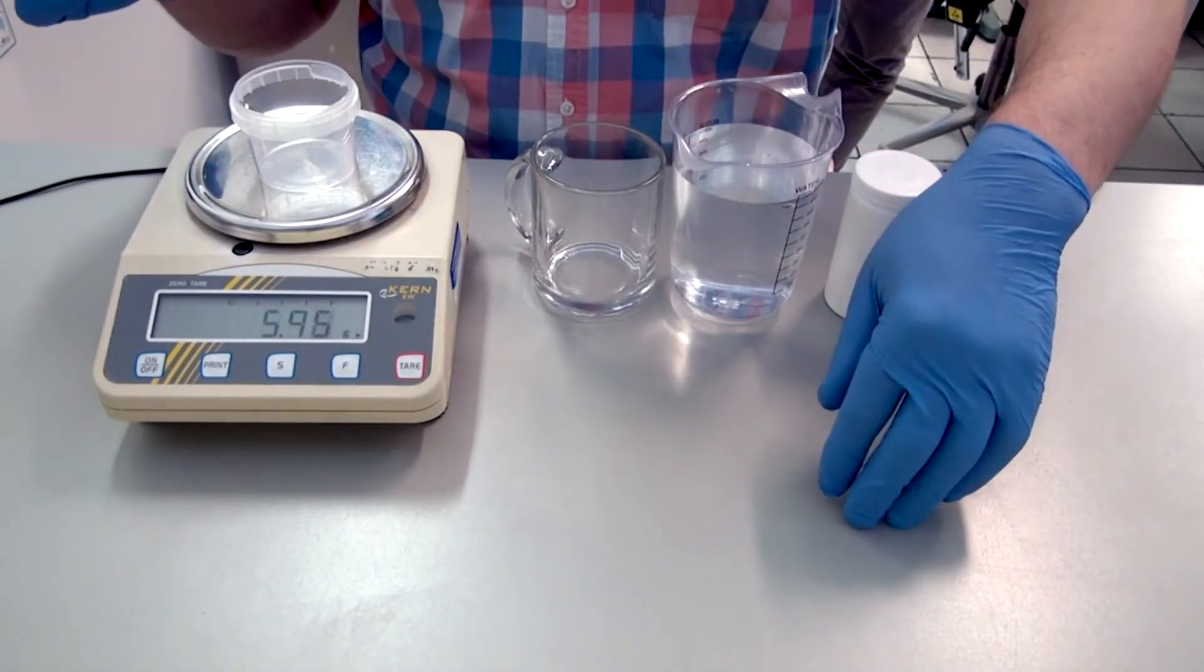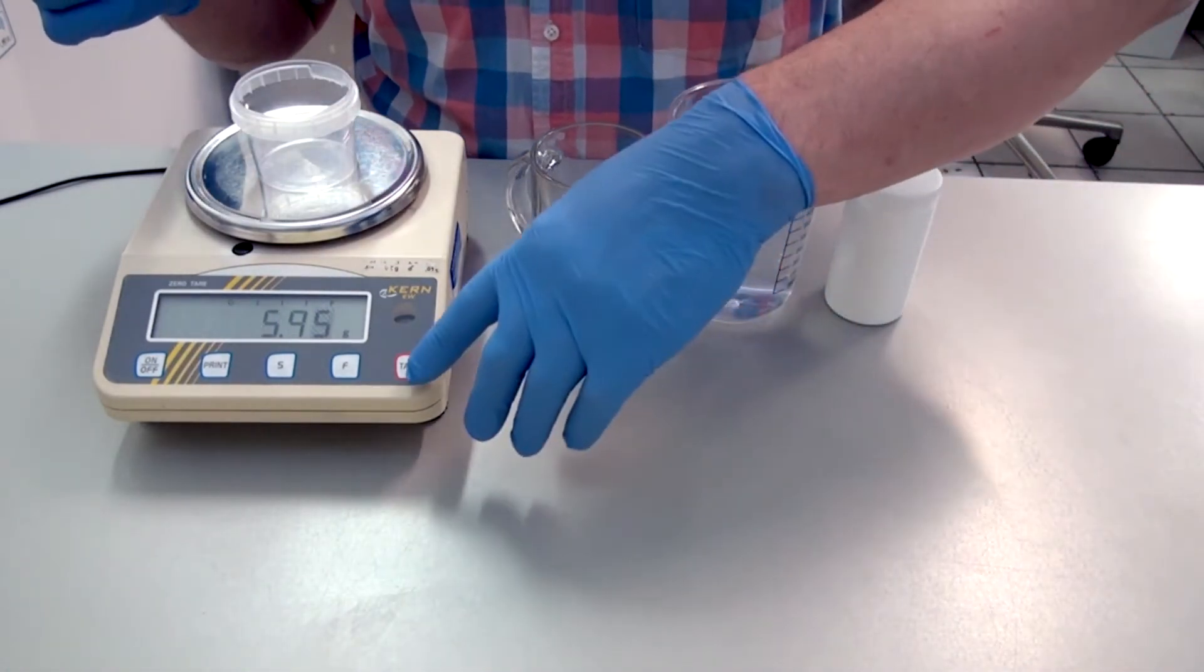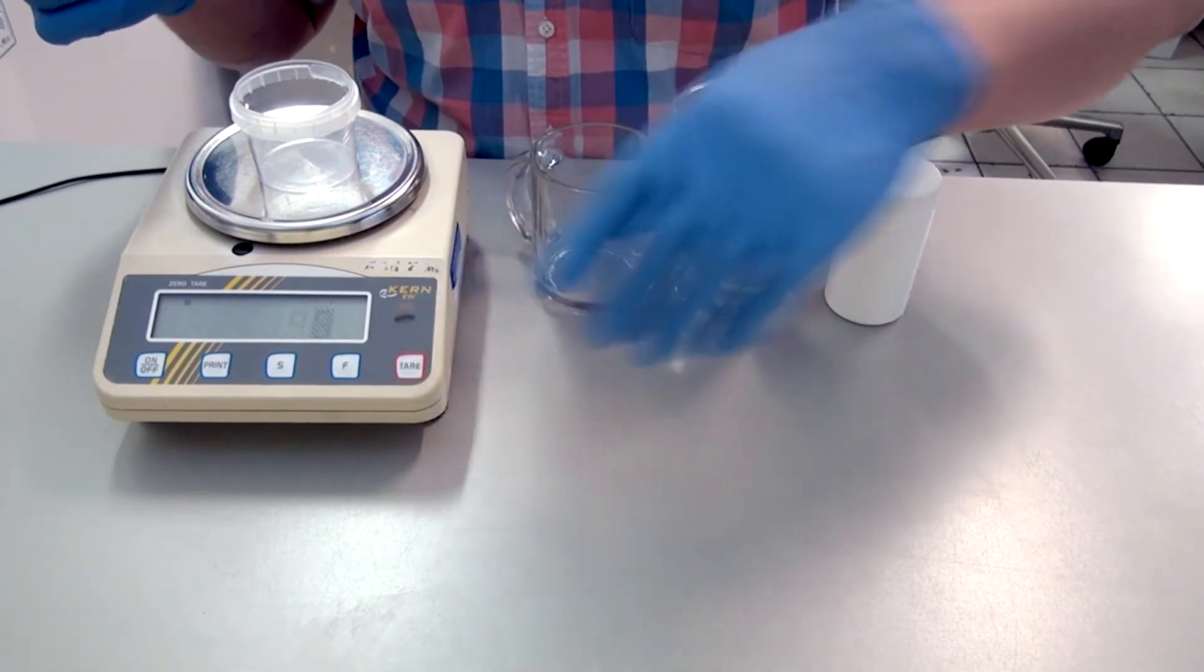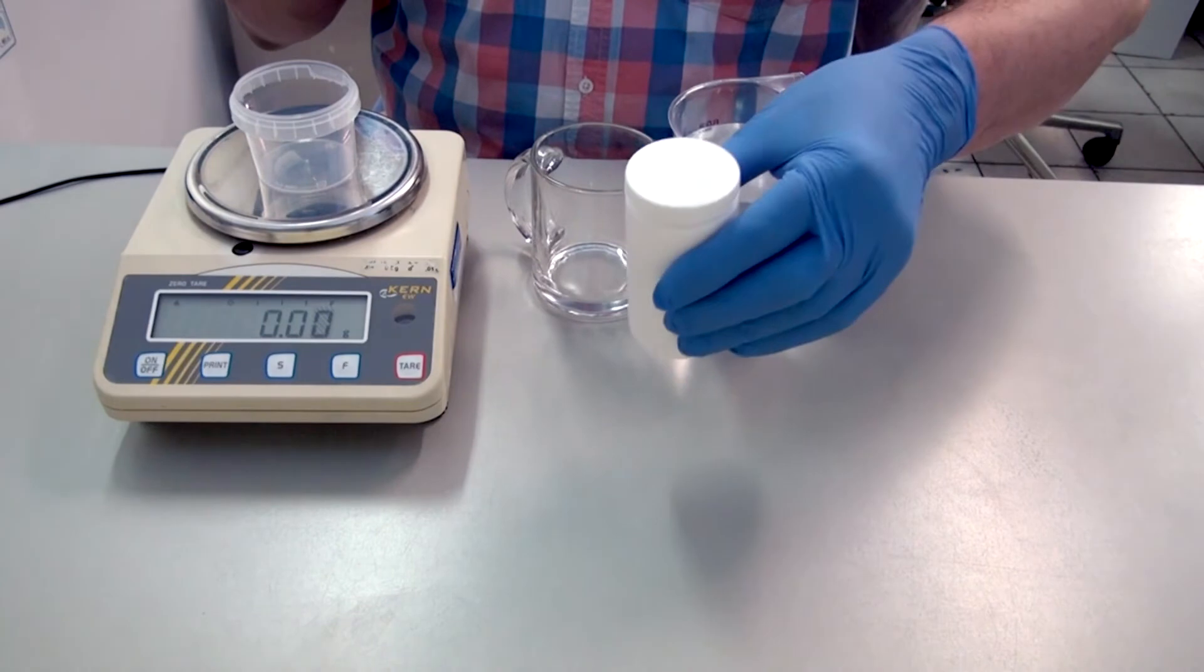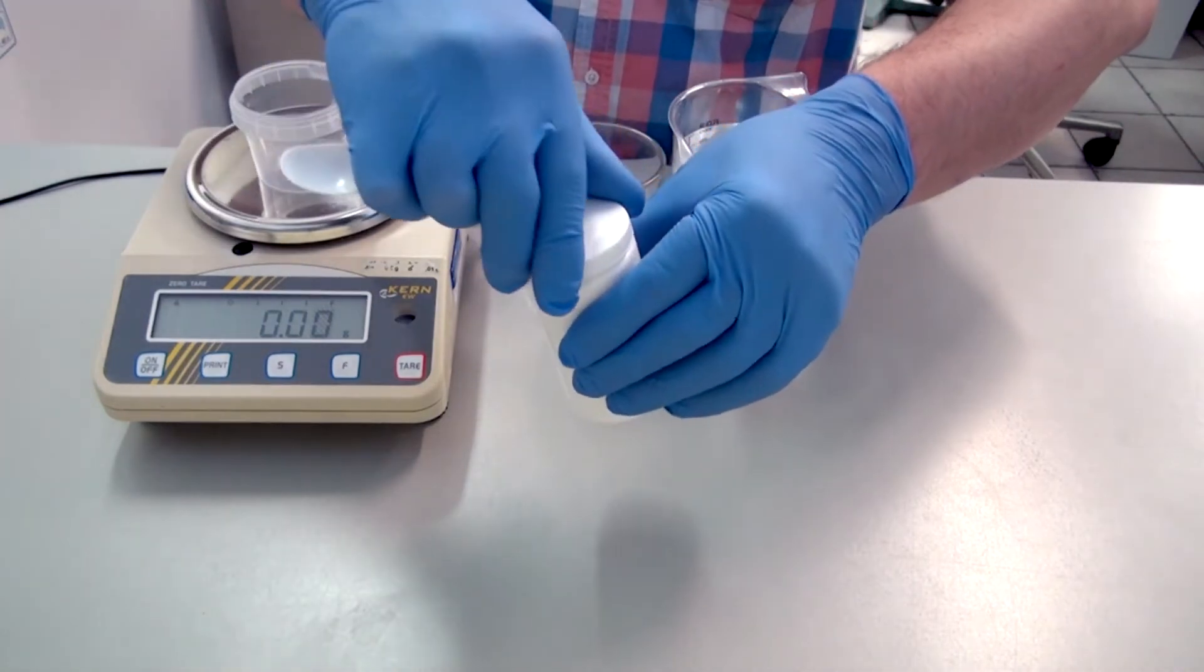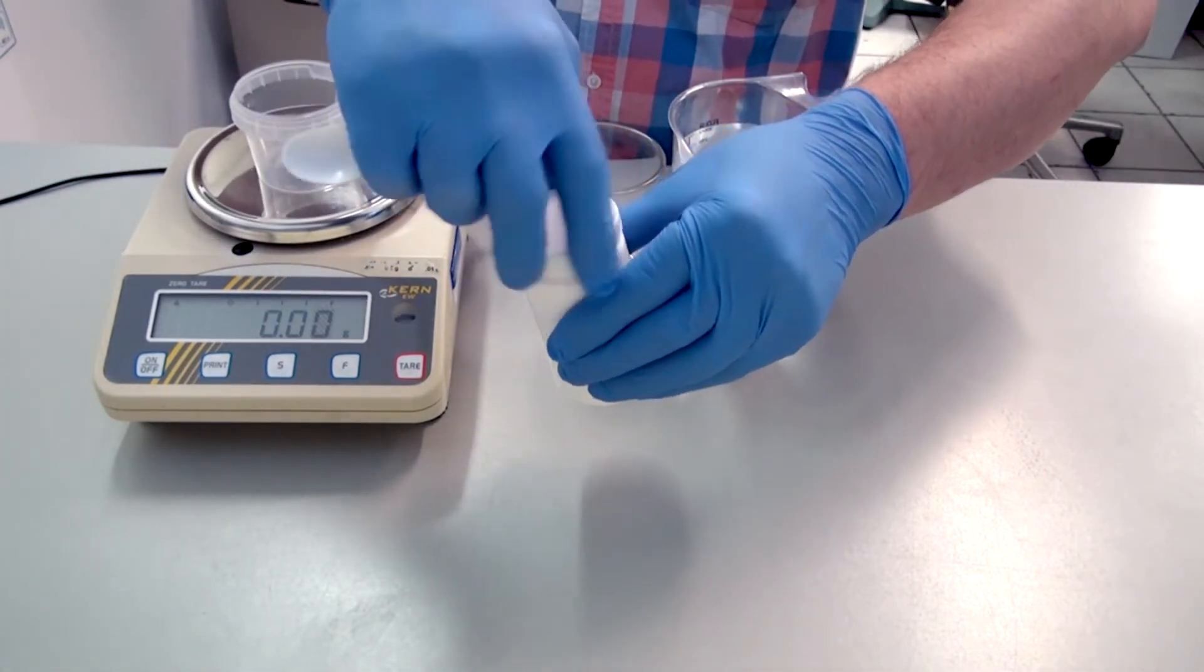Put the container on and press the tare button to zero out the weight of the container. Now, you can weigh your sodium dichloroacetate.